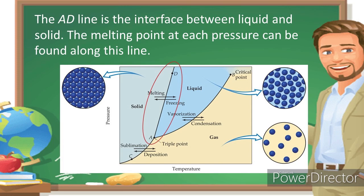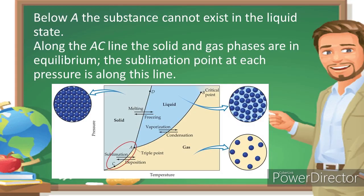The AD line is the interface between liquid and solid. The melting point at each pressure can be found along this line. Below point A, the substance cannot exist in the liquid state anymore. Along the AC line, the solid and gas phases are in equilibrium, and the sublimation point at each pressure is along this line.